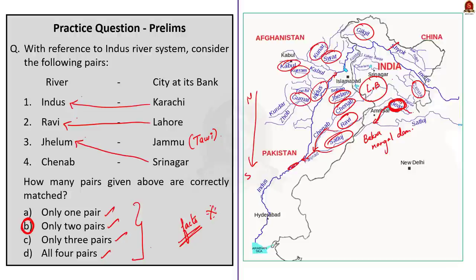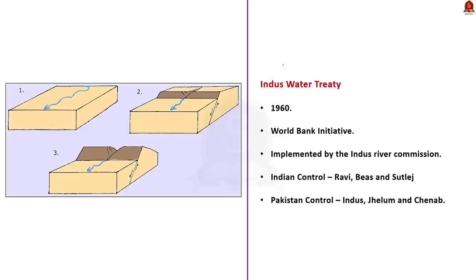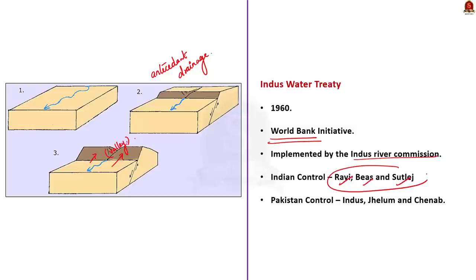The Indus flows in an antecedent drainage system, where the river is formed when the area around it is uplifted due to tectonic activity and the river, through continuous vertical erosion, forms very deep valleys. Regarding the Indus Water Treaty — an initiative of the World Bank implemented by the Indus River Commission — the Ravi, Beas, and Sutlej are under Indian control, while Indus, Jhelum, and Chenab are under Pakistan's control.